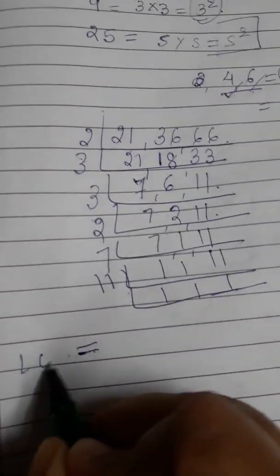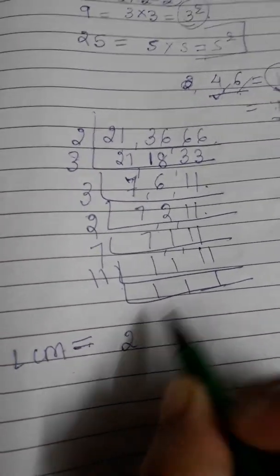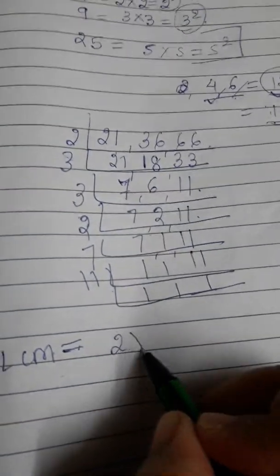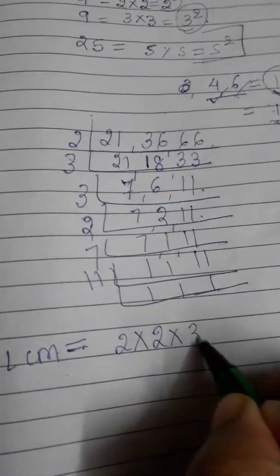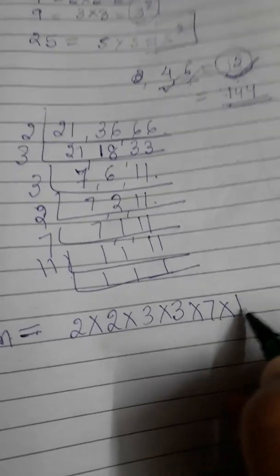Now the LCM will become what? 2. How many 2's are there? Two 2's. So let me write it together: 3, 3, and 7 into 11.